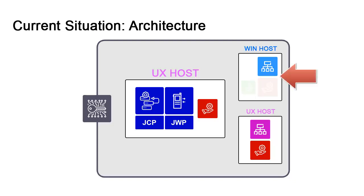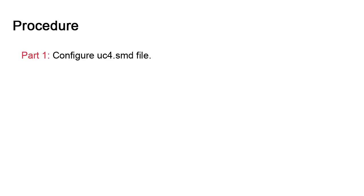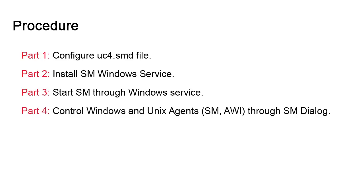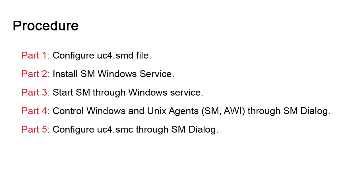This presentation is going to focus on the Windows hosts. We'll show how to configure Service Manager and the Dialog. The procedure is as follows: first we configure the definitions file. We have a Windows agent and an installed Service Manager, and we'll update the SMD file so that we can generate the agent service. Then we'll install the Service Manager Windows service, which gives us the ability to stop and start interactively and auto-start at boot. Then we'll start the Service Manager, show how to control all Service Managers through the Dialog, and review behaviors in AWI. Finally, we'll configure agent services in Service Manager and see the impacts on the UC4.SMC file.